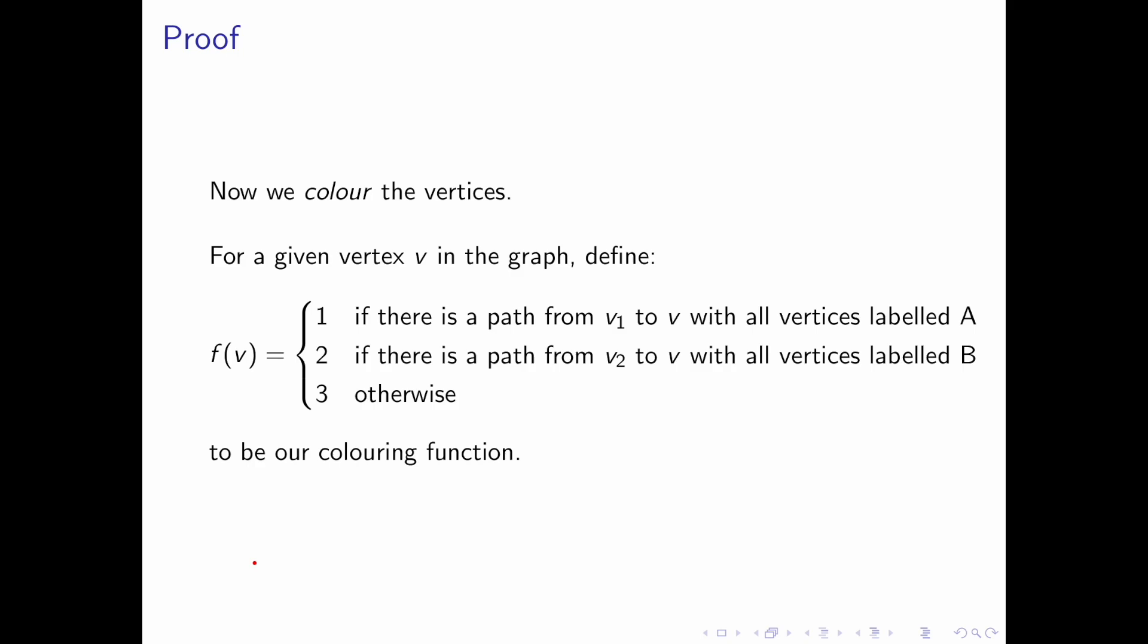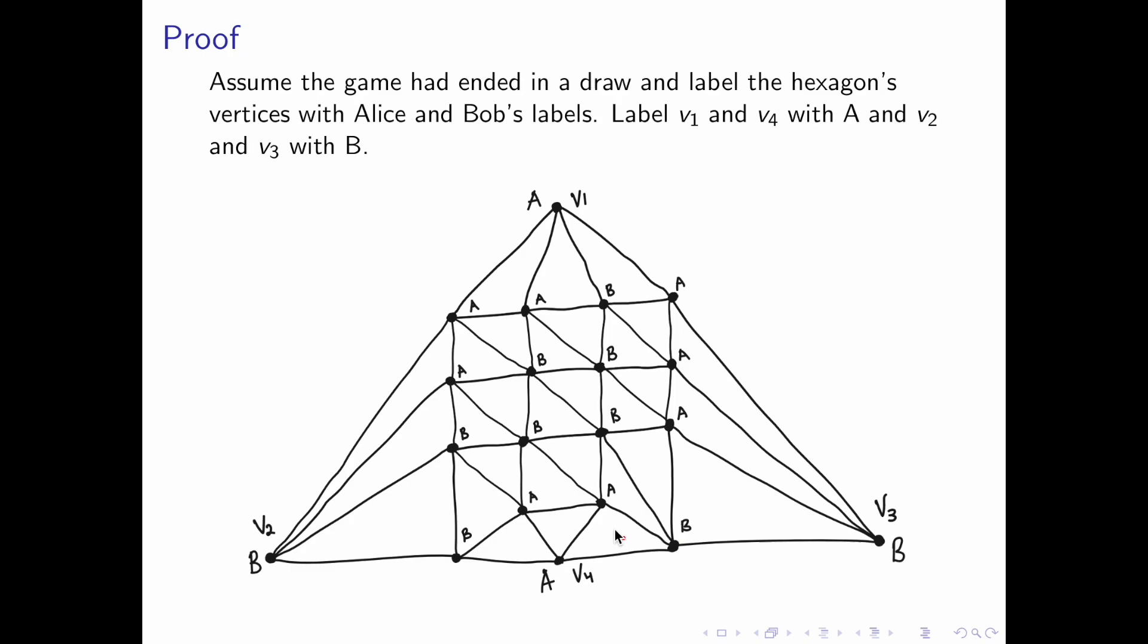Next, we will add Sperner coloring to this triangulation. We will color the vertices using a coloring function as follows. f will color a given vertex v as 1 if there's a path from v1 to v where all vertices are labeled A. And similarly, f of v equals 2 if there's a path from v2 to v with all vertices labeled B. Otherwise, f of v equals 3.